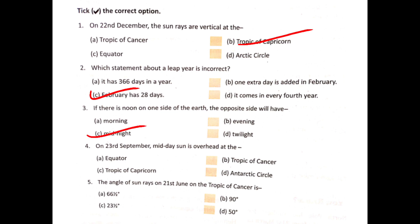Question 4: On 23rd September, midday sun is overhead at the equator.